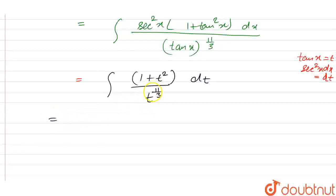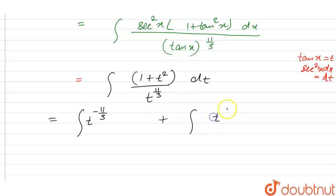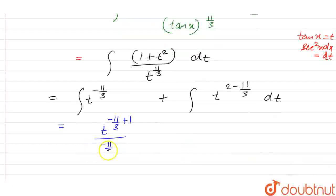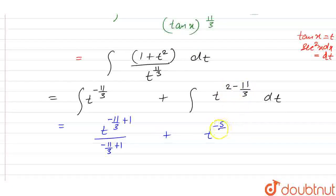Let's separate it out. This term becomes the integral of t to the power minus 11/3 dt, plus the integral of t to the power 2 minus 11/3, that is t to the power minus 5/3, dt. Applying the power rule, we get t to the power (minus 11/3 + 1) upon (minus 11/3 + 1), plus t to the power (minus 5/3 + 1) upon (minus 5/3 + 1).